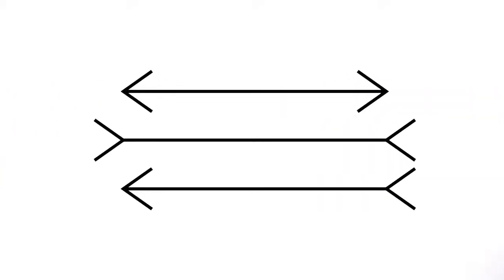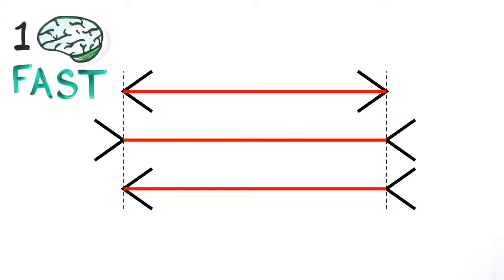Take these lines for example. It's clear that they're different lengths, but if you measure them, they're actually the exact same length. Even now that you know, System 1, or your fast thinking, can't stop seeing the illusion because it acts automatically.